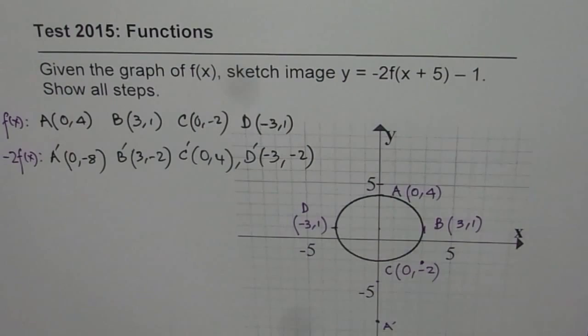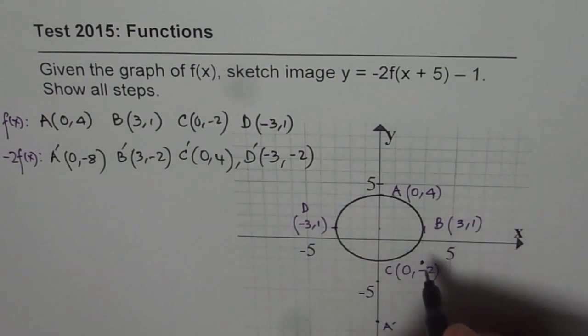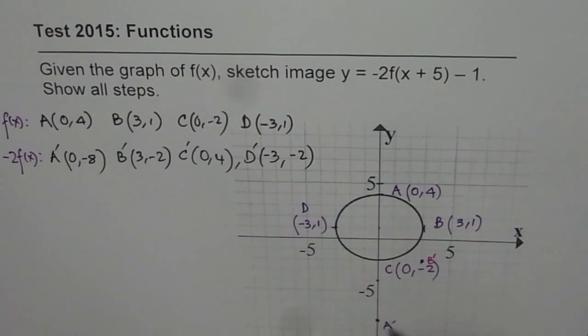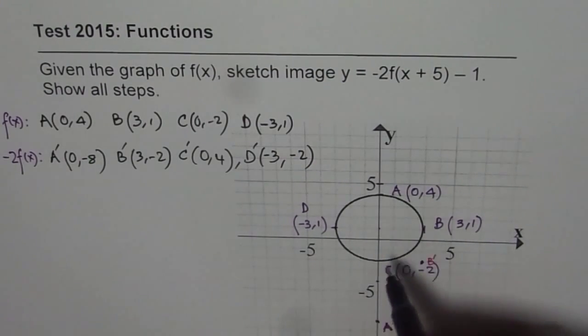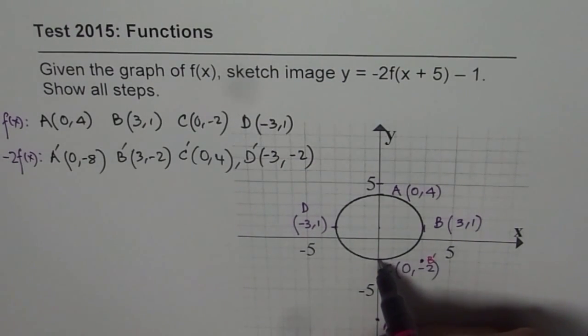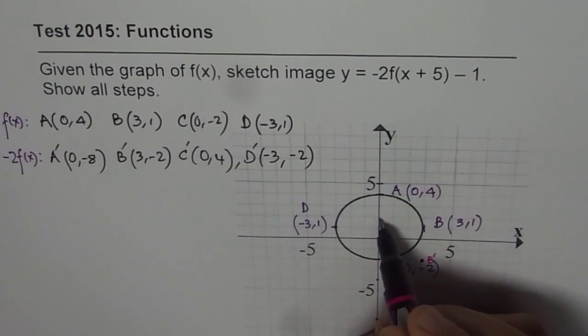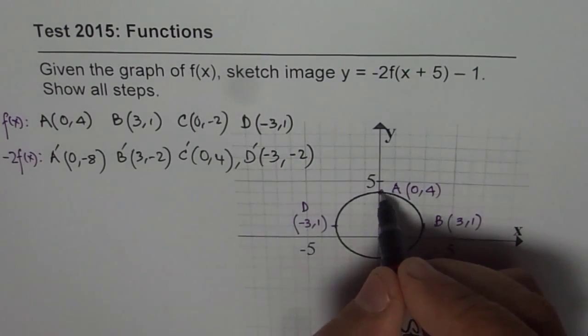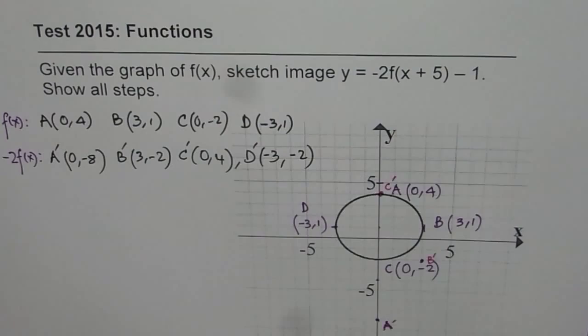It's good to use another ink at this moment. So we'll use B dash. Let me write A dash. Similarly, C, which is right here, 2 units down, will go 2 units up and then get multiplied. So that becomes C dash for us.